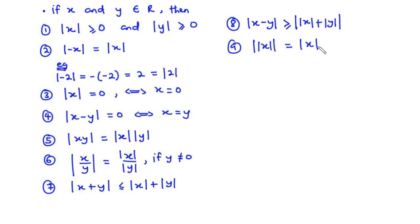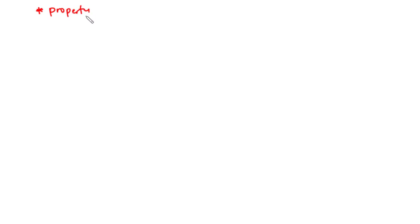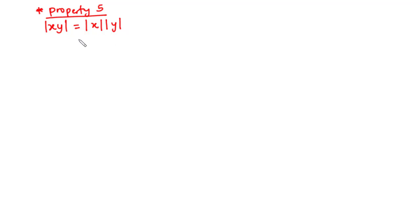In total we have nine properties, and in the next section we are going to prove the validity of properties five, six, seven, and eight. Let's focus on property five: the absolute value of xy equals the absolute value of x times the absolute value of y. To prove this, we need to consider four different cases for x and y.